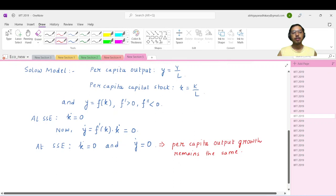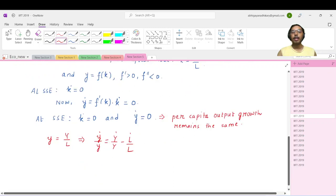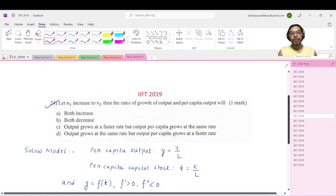Now if you just look at it, what is small y? It is capital Y by L. If you take log and do time derivative, small y dot by y equals capital Y dot by Y minus L dot by L. At steady state, small y dot is zero, so capital Y dot by Y equals L dot by L.